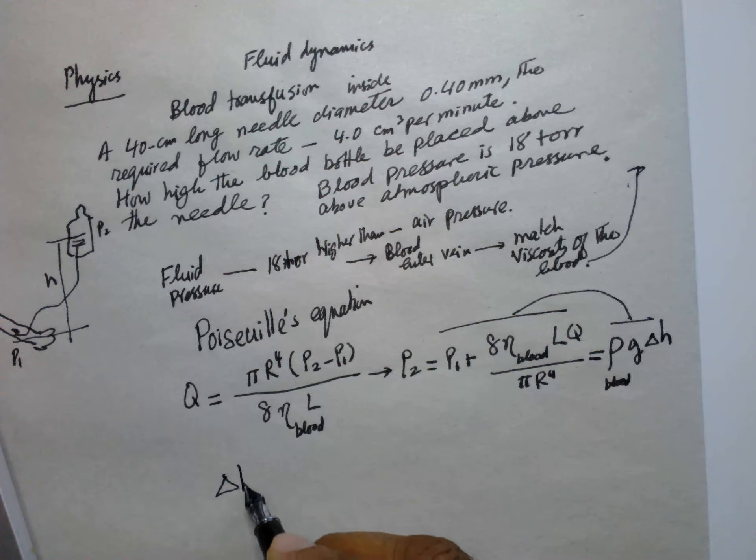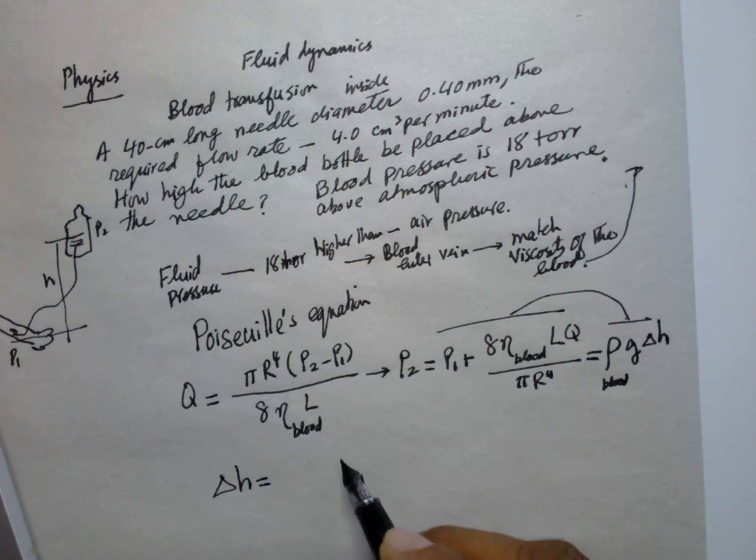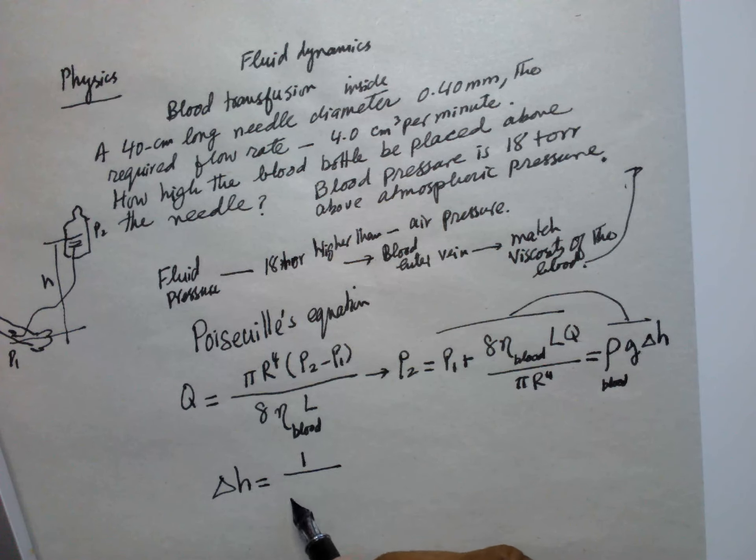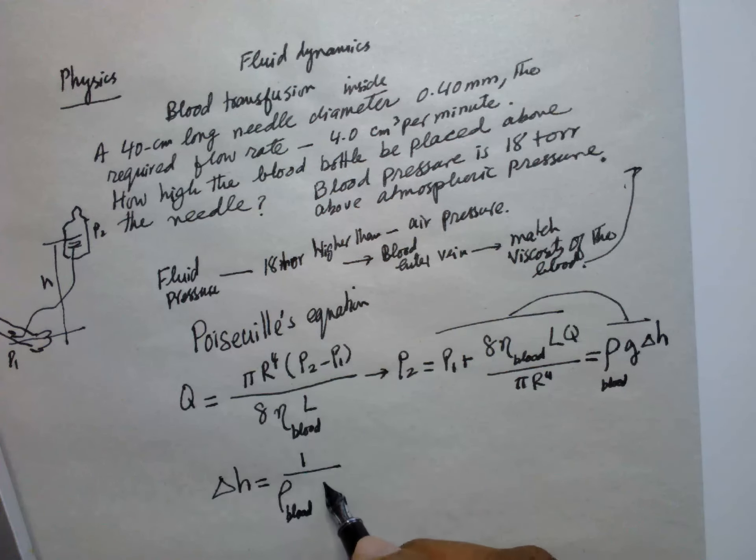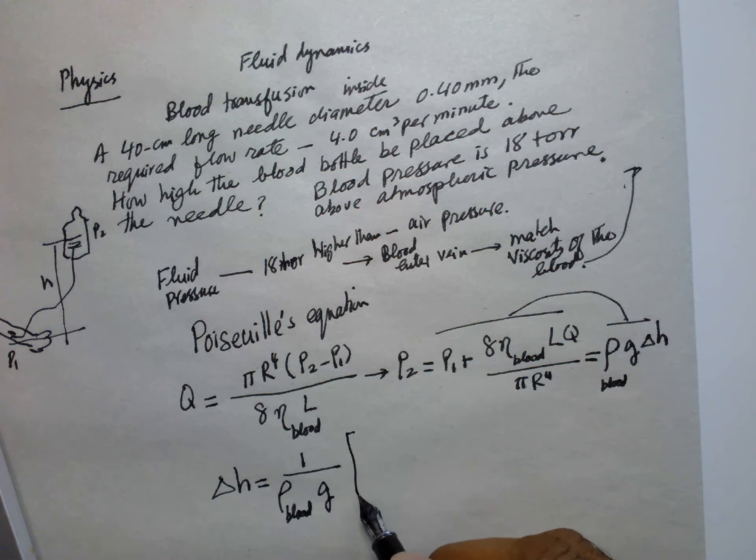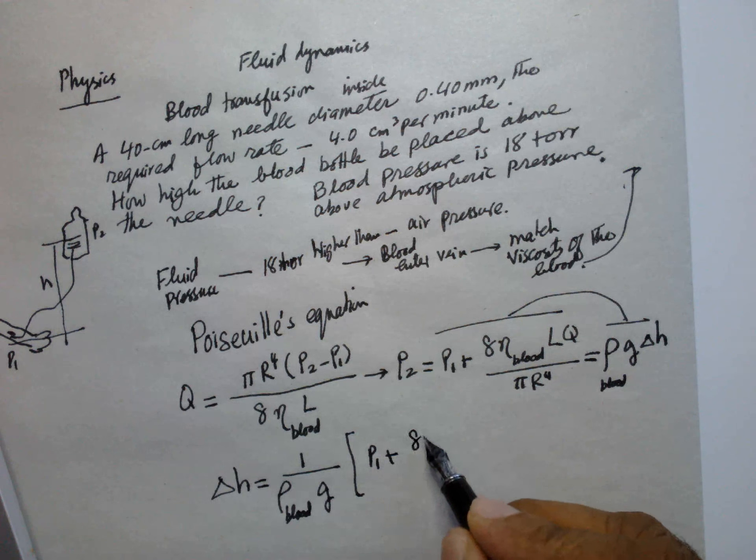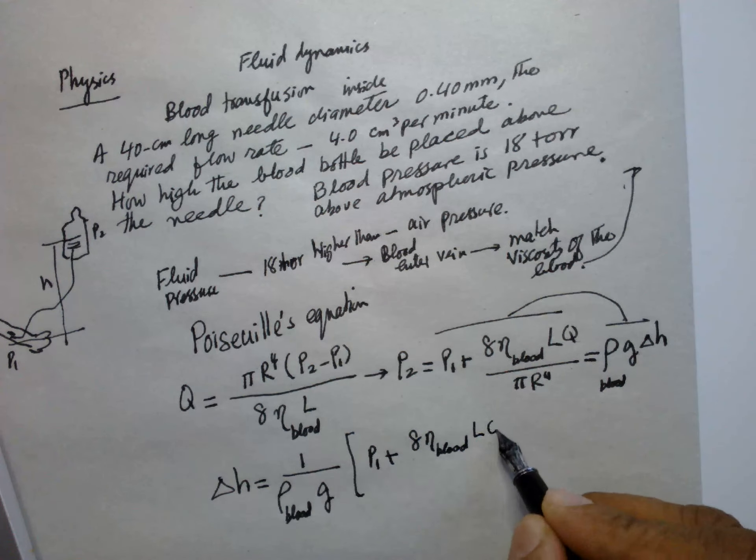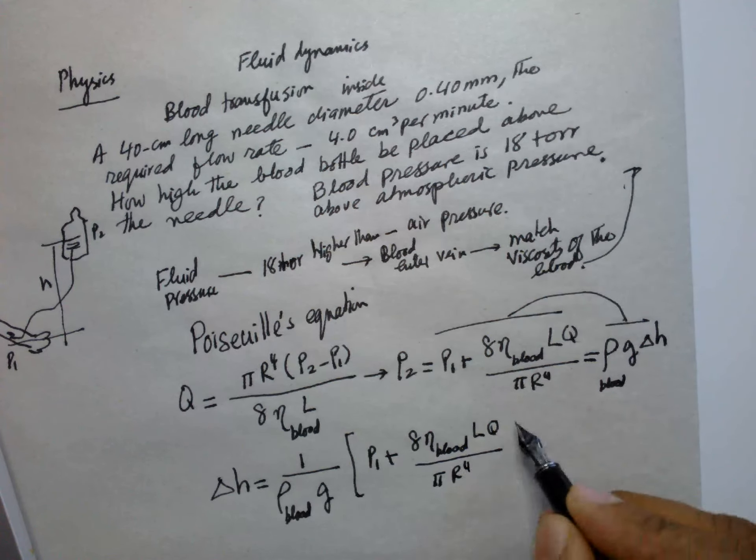So from here we can find out Δh which is equal to 1 over ρ_blood times g into (P₁ + 8ηLQ/πr⁴).